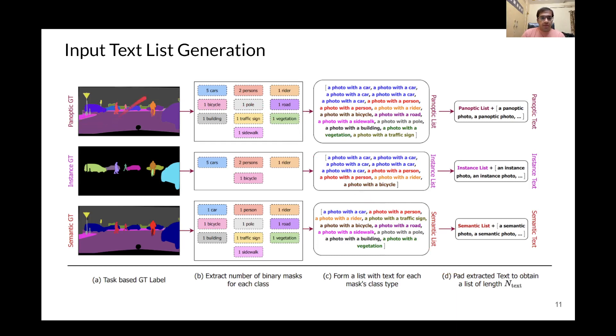For example, a panoptic ground-truth label has 5 cars, an instance ground-truth label has 5 cars, but a semantic ground-truth label only has 1 car mask. Similarly, for road, a panoptic label has 1 road mask, an instance label has 0 road masks, and a semantic label has 1 road mask.